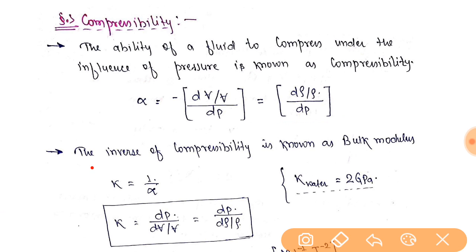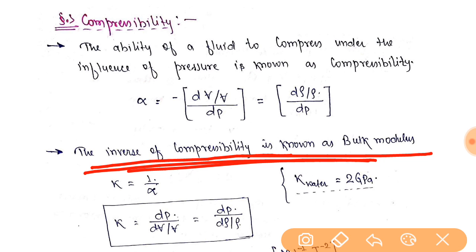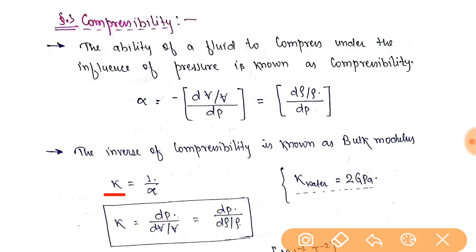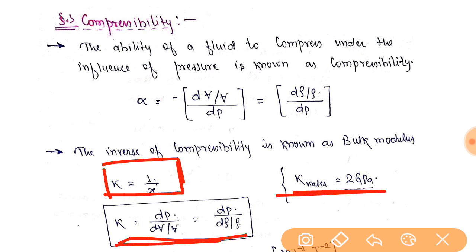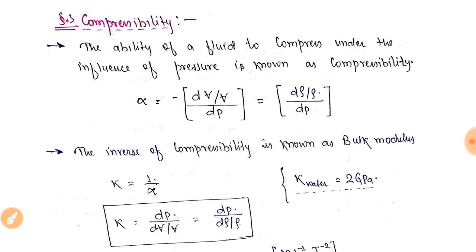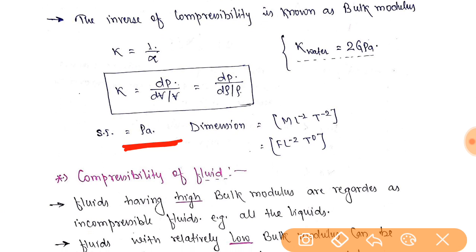The inverse of compressibility is known as bulk modulus. So the inverse of compressibility is called bulk modulus. Bulk modulus is denoted by K. So K is equal to 1/alpha. Putting the formula, K equals dP divided by change in volumetric strain dV/V. The bulk modulus of water is 2 GigaPascal. The unit of bulk modulus is Pascal and its dimension is ML⁻¹T⁻².